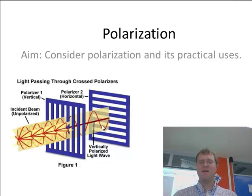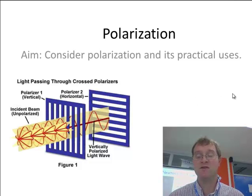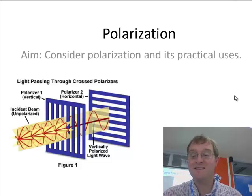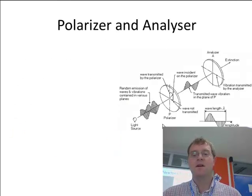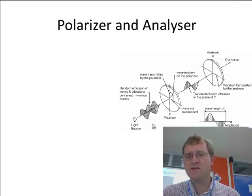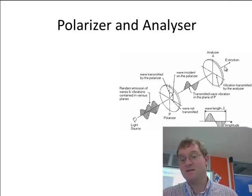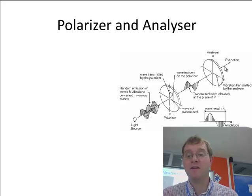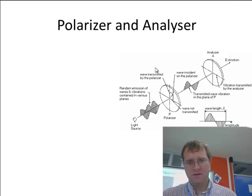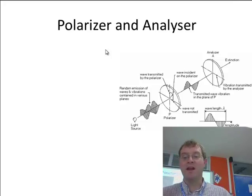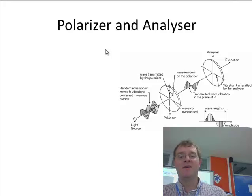Let's think about this in a little more detail, putting some numbers behind what happens in these situations — specifically the light intensity that passes through. Here I've got a situation similar to the first diagram, where I have what's known as the polarizer and then the analyzer. The analyzer allows me to look in detail at the light that has come through. These are terms we'll use more when thinking about substances and how they can impact the direction in which light is polarized.